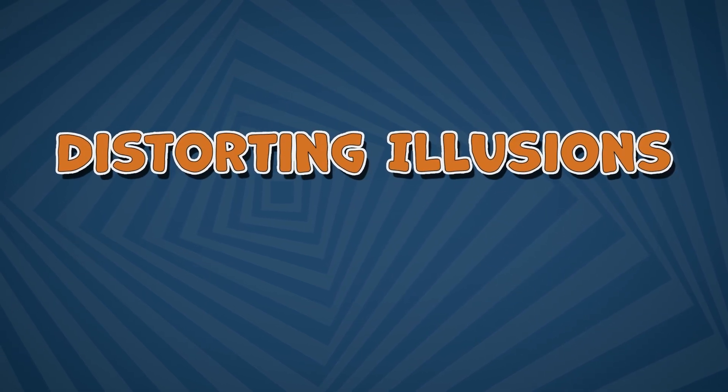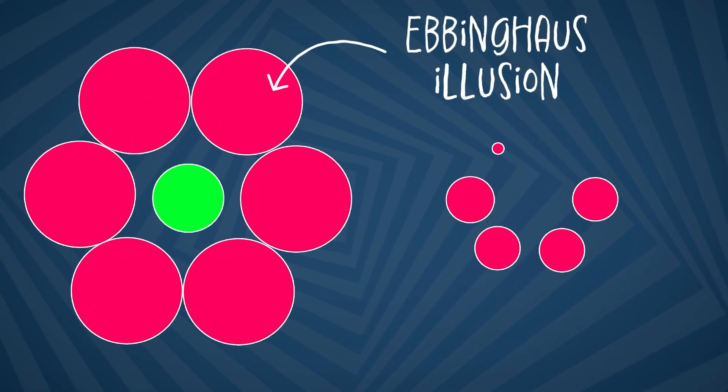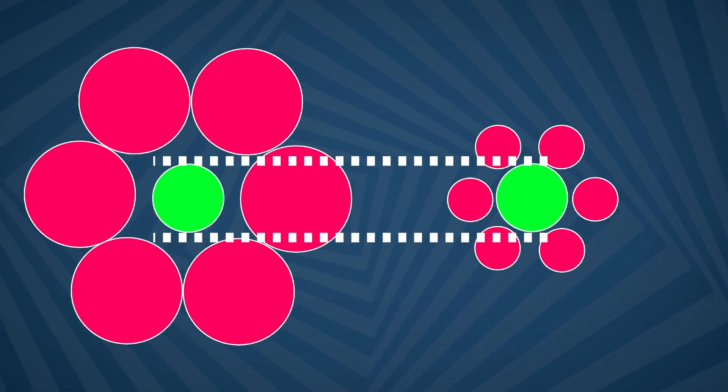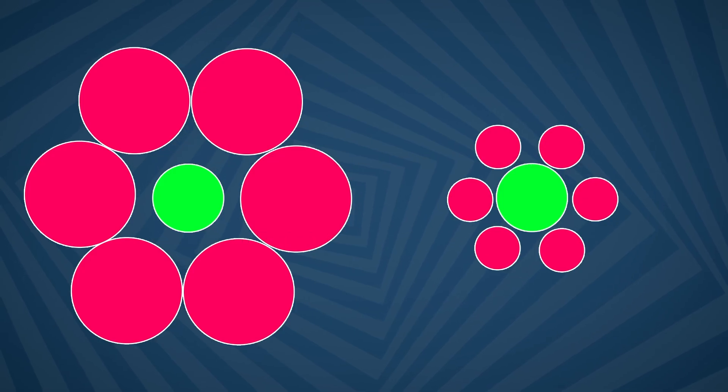Distorting illusions. These mess with our perception of size, length, or curvature. Think of the Ebbinghaus illusion, where two identical circles look different in size because of their surroundings.